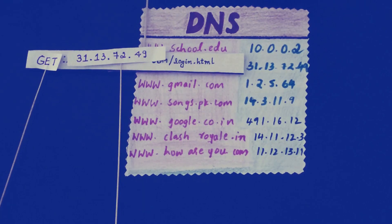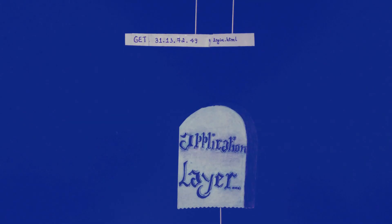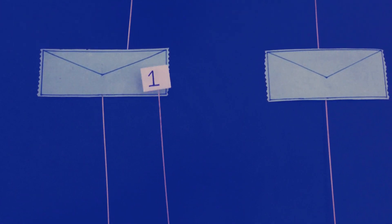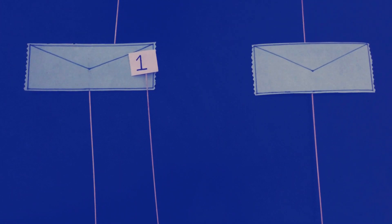A GET message is used to request pages from the web server. The message is then passed to the transport layer, where it is segmented or broken into pieces for transport. The transport layer encapsulates those pieces, and a sequence number is assigned to each of these segments.